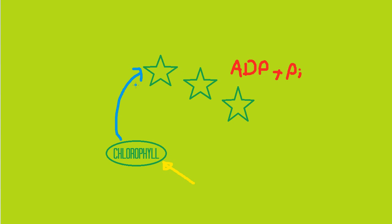The electrons are passed down this chain of electron carriers, losing a bit of energy each stage. This energy is used to make the equation ADP plus Pi goes to ATP, so this energy is used to produce ATP.